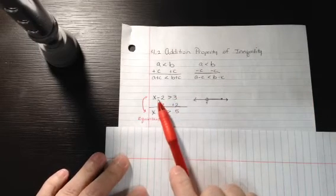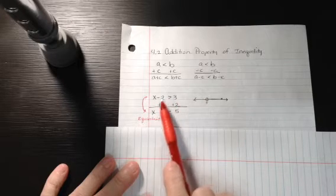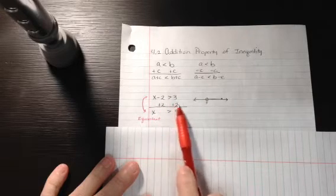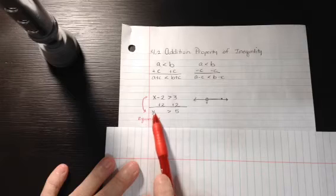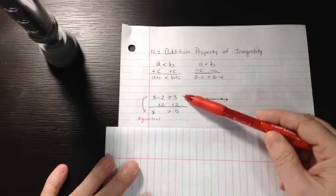So in this inequality here, we're going to solve it as if this were an equal sign. We're going to add 2 to both sides to get x is greater than 5. These two statements are equivalent statements.